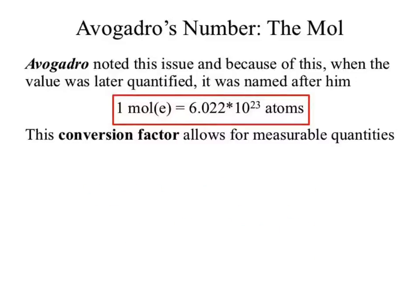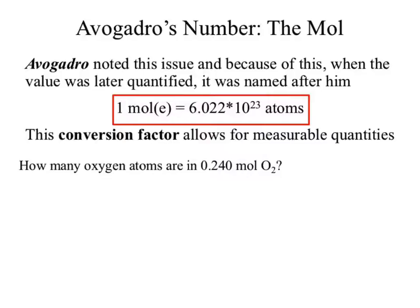A large part of chapter 8 is looking at the scale of that and converting things around into that different unit. It had to do with how a mole gets converted into our periodic table. So let's look at some bulk conversions: how many oxygen atoms are in 0.24 moles of O2?